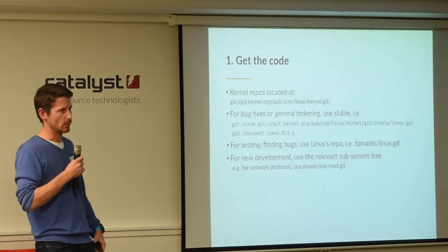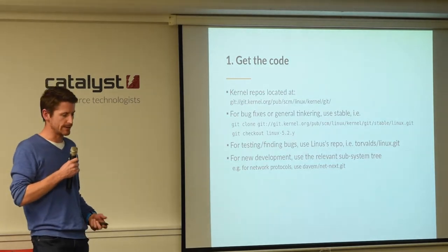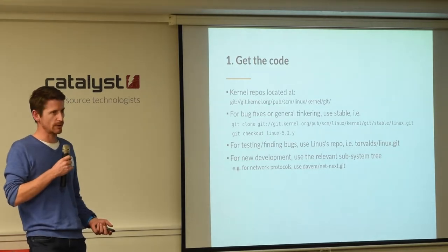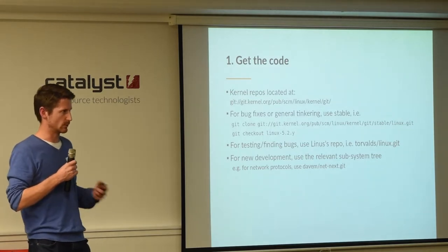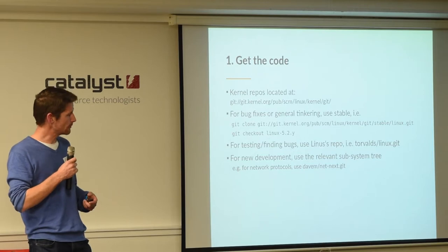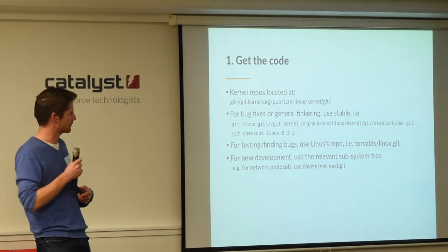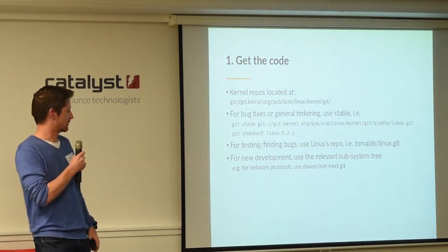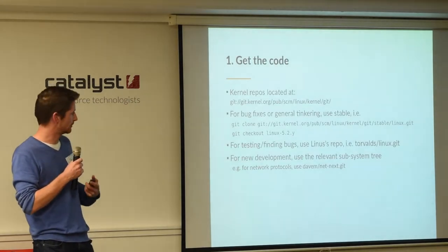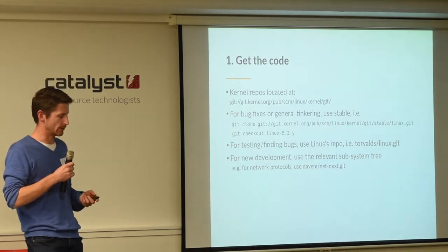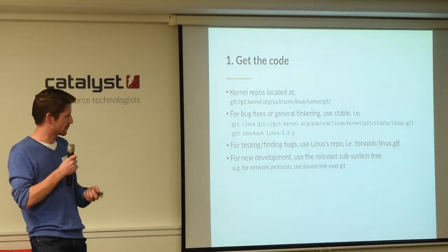The first question is: which of the 300-odd git repos do you actually want to use? If in doubt, it's best to use the stable repo — that gives you a fairly solid and reliable base to work from, so if you come across weird problems, they're probably of your own doing. If you're just interested in testing the latest kernel, use Linus's repo. If you're doing new development, there'll be a relevant maintainer subsystem tree to use.